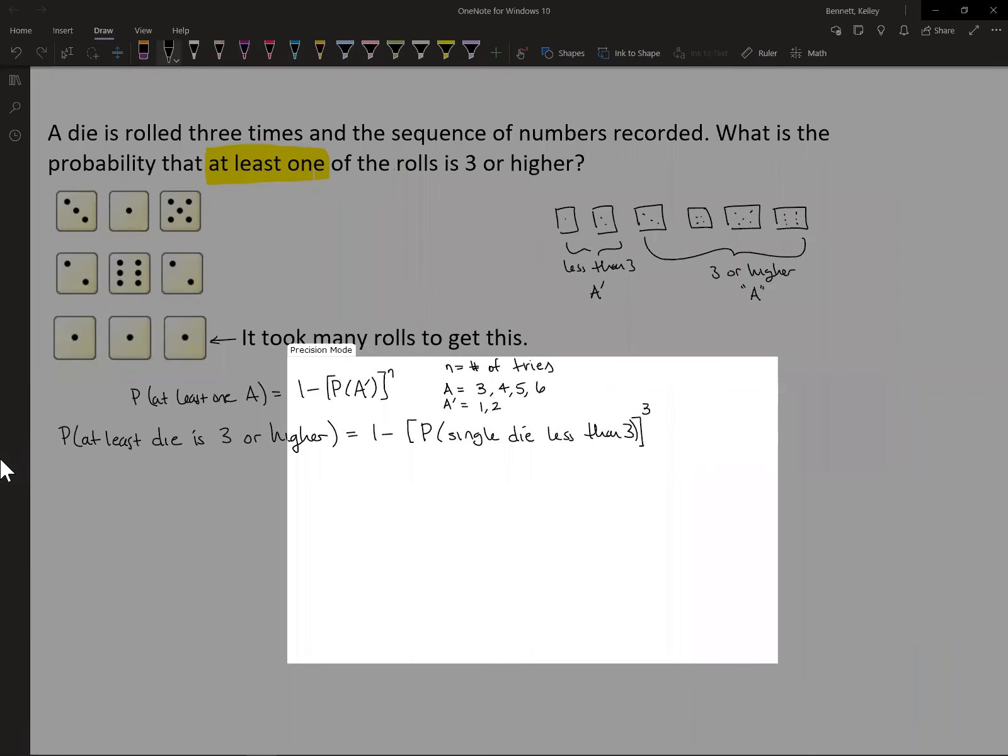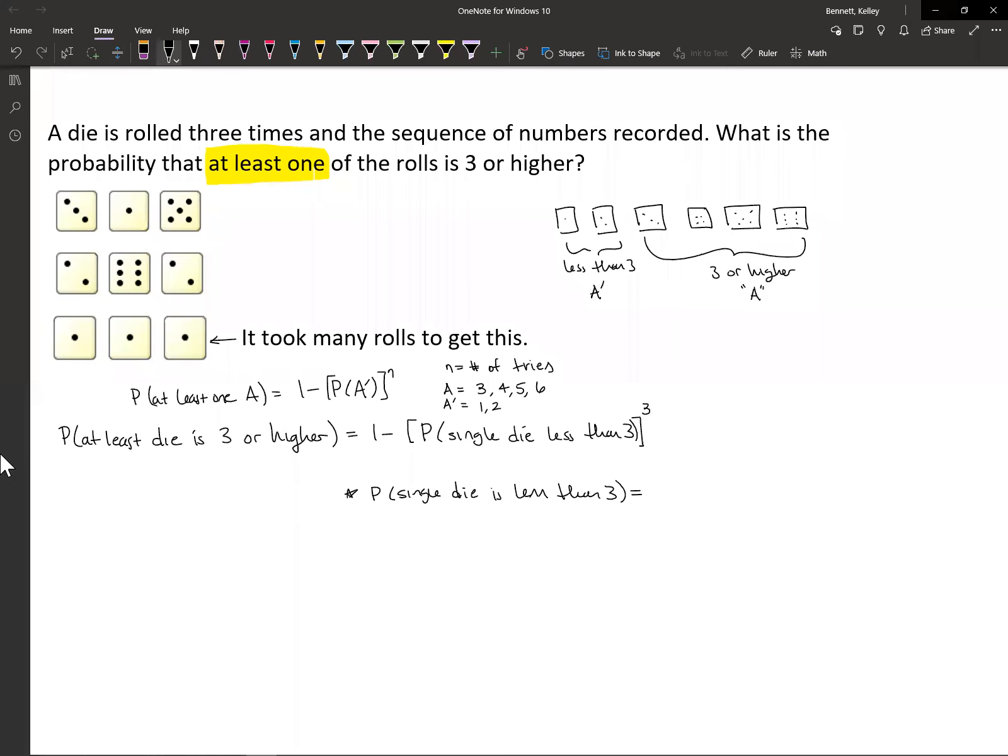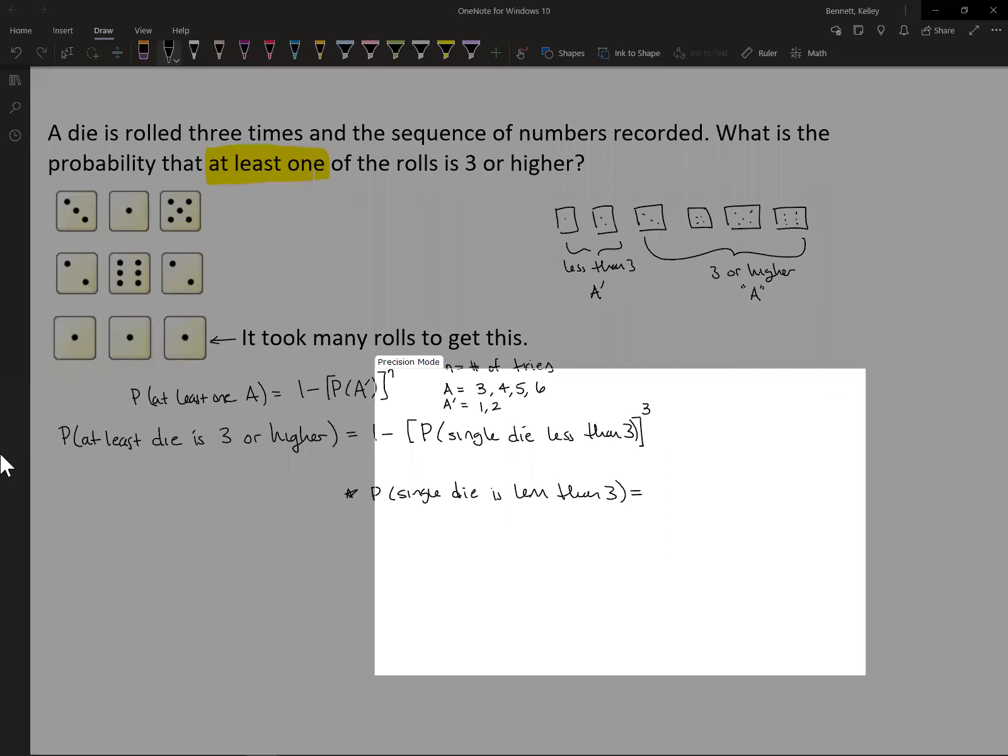Let's first look at the probability that a single die is less than three. If I'm looking at this up here, that means this is the probability of rolling a one or a two. This is the probability of getting a one or a two.